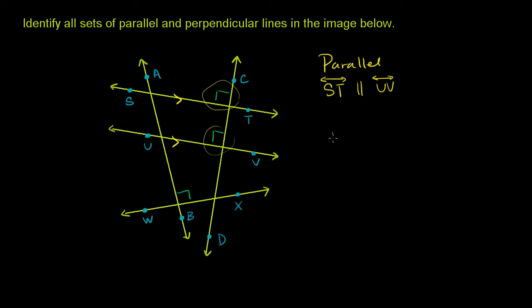Now let's think about perpendicular lines. Perpendicular lines are lines that intersect at a 90 degree angle. So, for example, line ST is perpendicular to line CD.